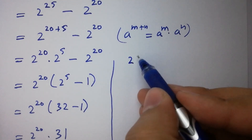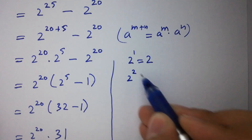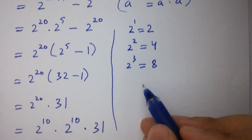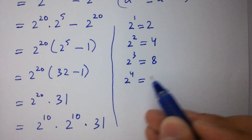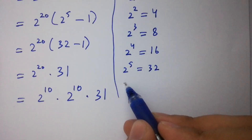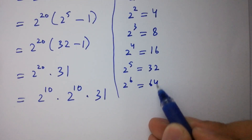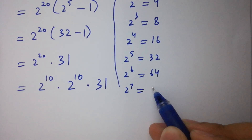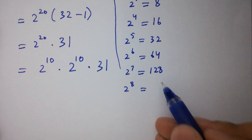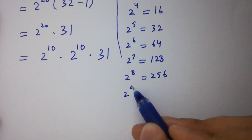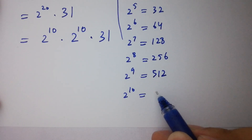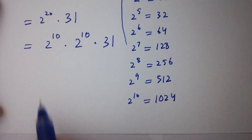2 to the power 1 equals 2. 2 to the power 2 equals 4. 2 to the power 3 equals 8. 2 to the power 4 equals 16. 2 to the power 5 equals 32. 2 to the power 6 equals 64. 2 to the power 7 equals 128. 2 to the power 8 equals 256. 2 to the power 9 equals 512. 2 to the power 10 equals 1024.